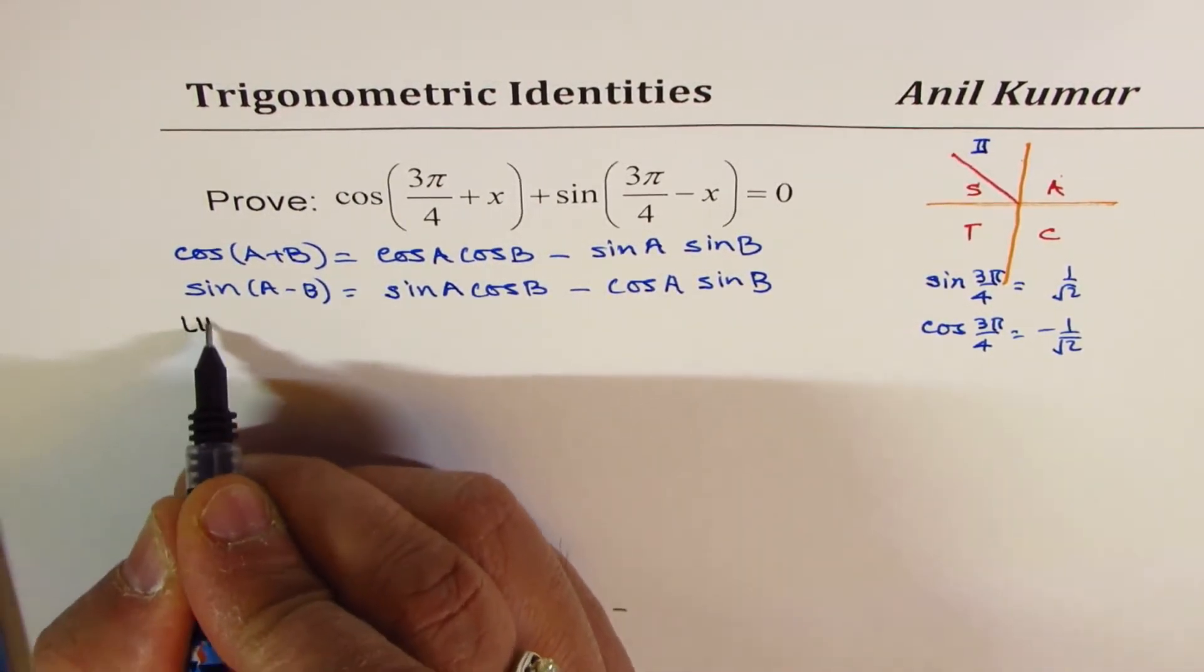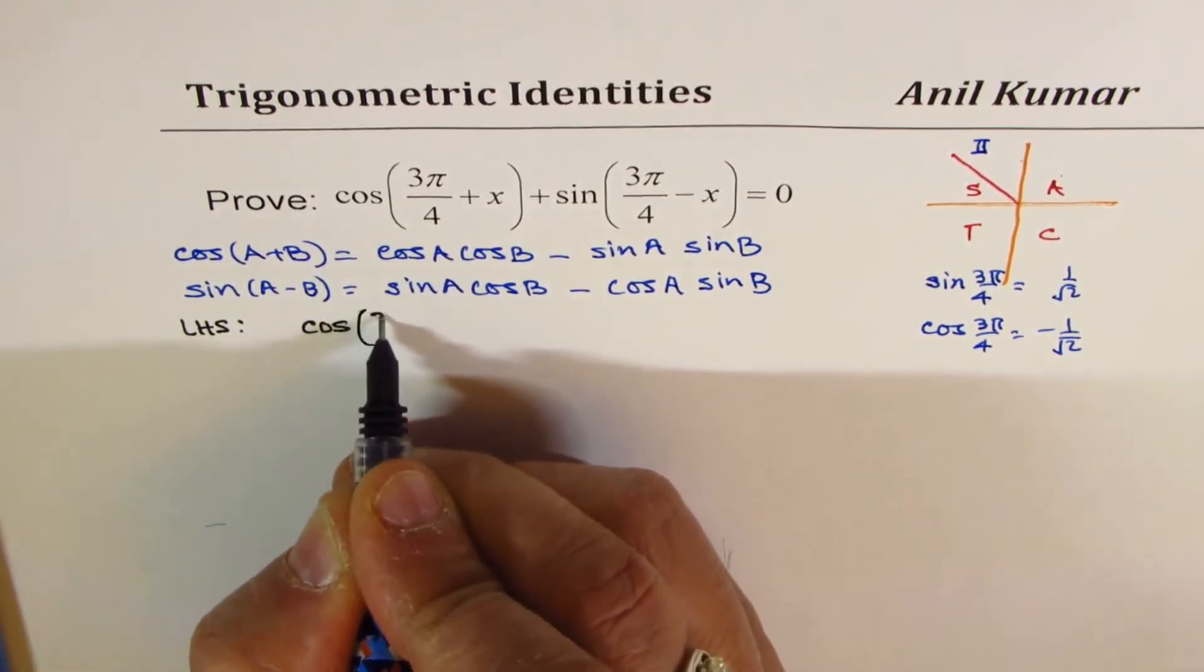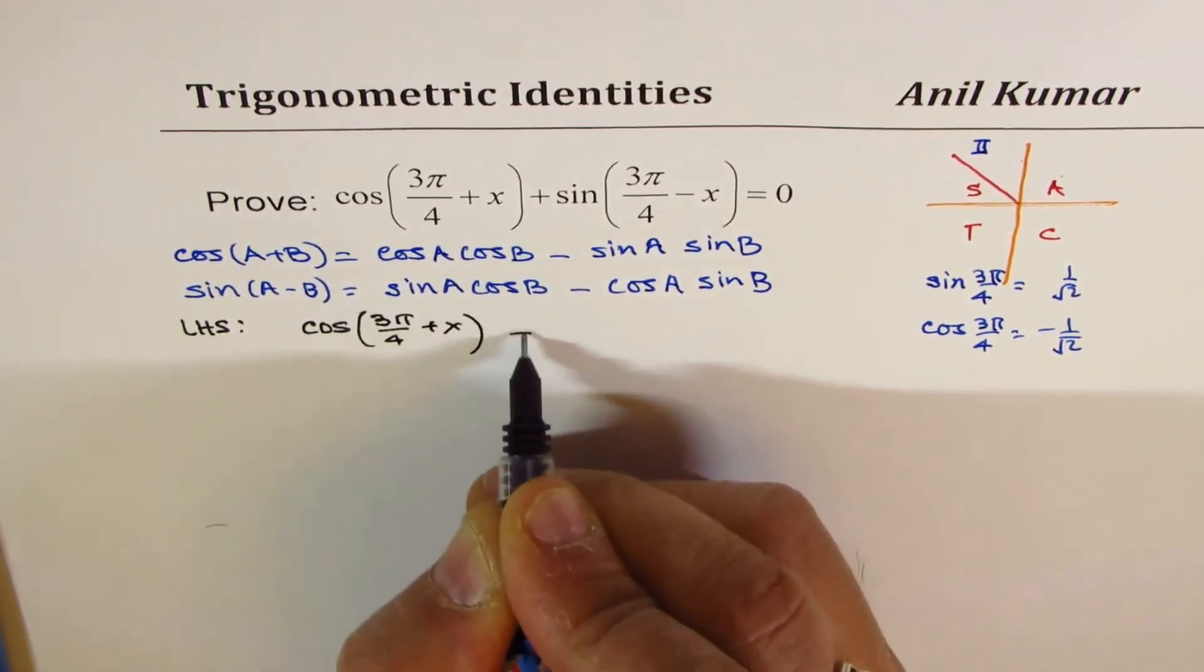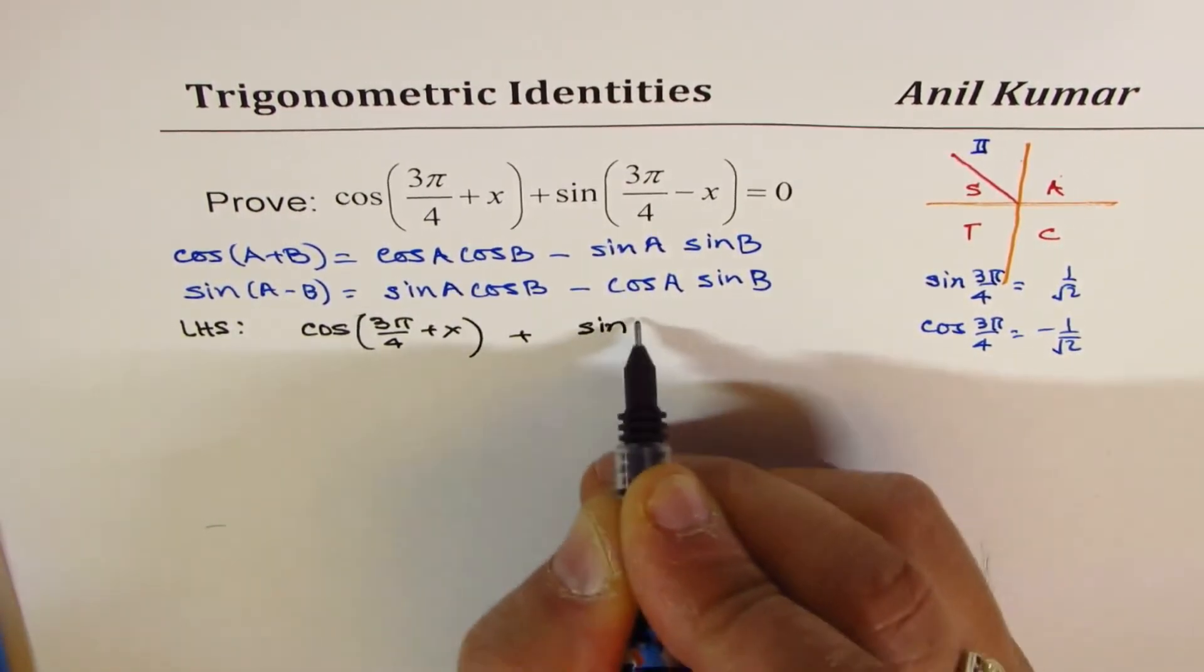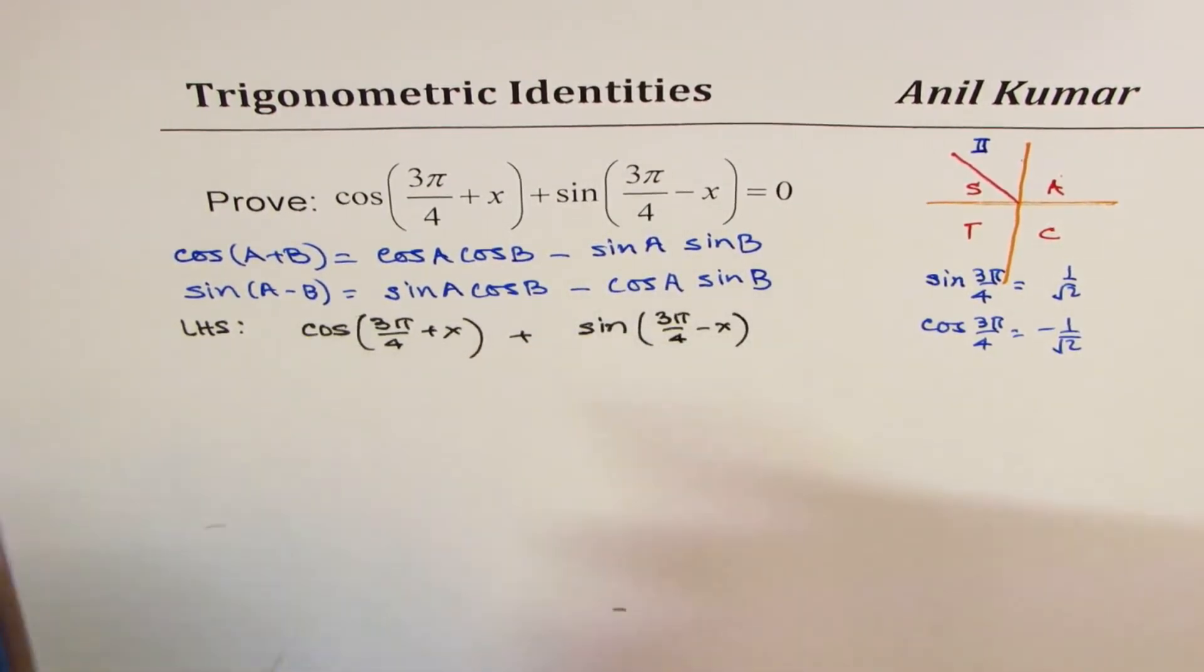So let's begin with the question. We'll begin from the left-hand side, which is cos(3π/4 + x) + sin(3π/4 - x).